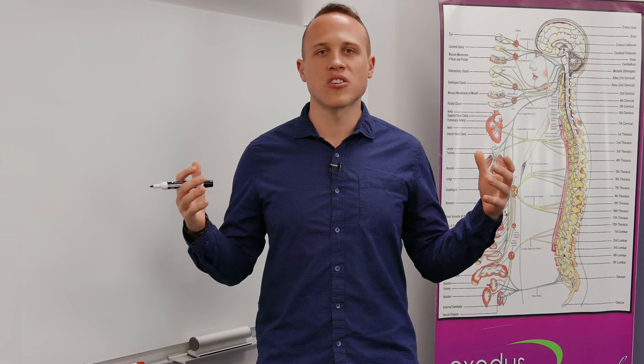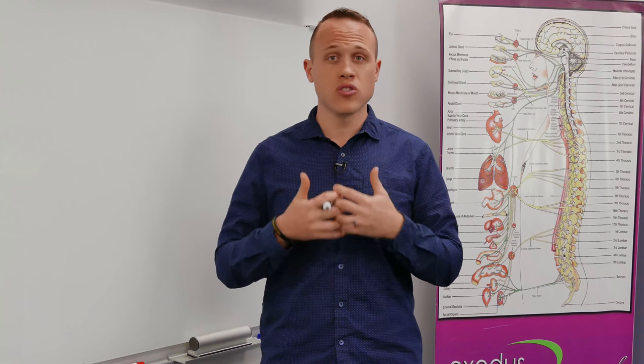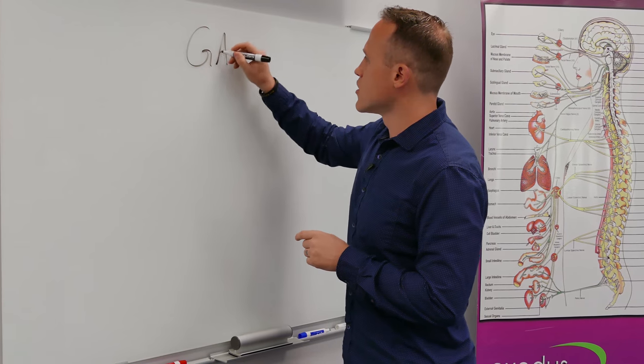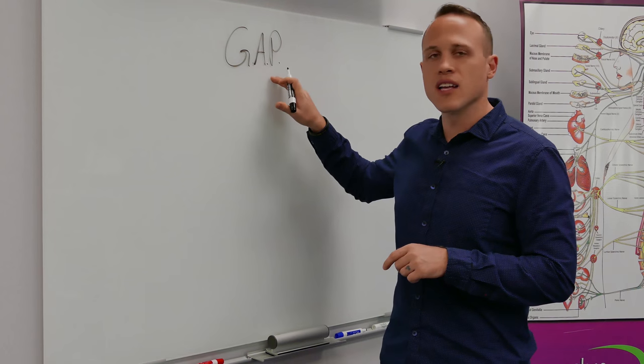Now, there's millions of external factors, but what we can help you with here at Exodus is your internal environment, which is the most important in helping you adapt to stress in the environment. And so I like to look at this in what I call a GAP model, G-A-P. That's your general adaptive potential.